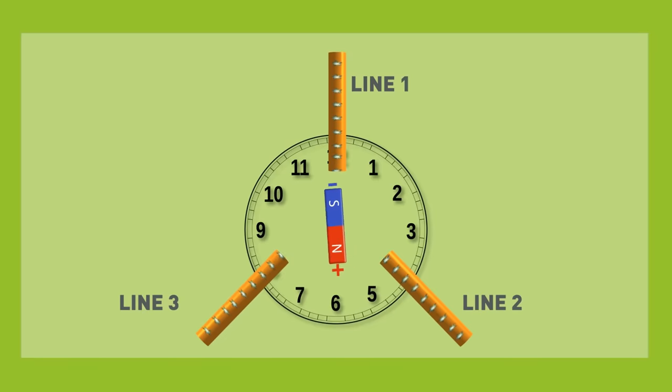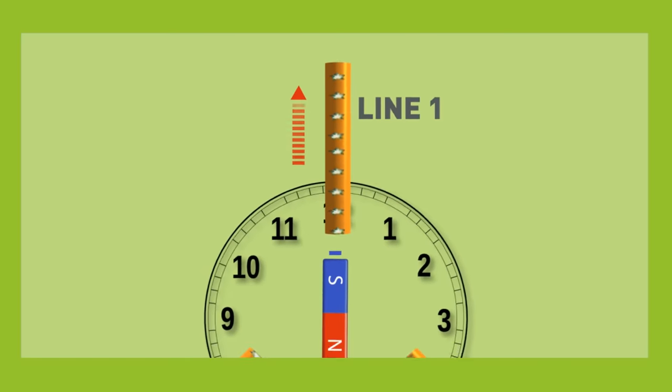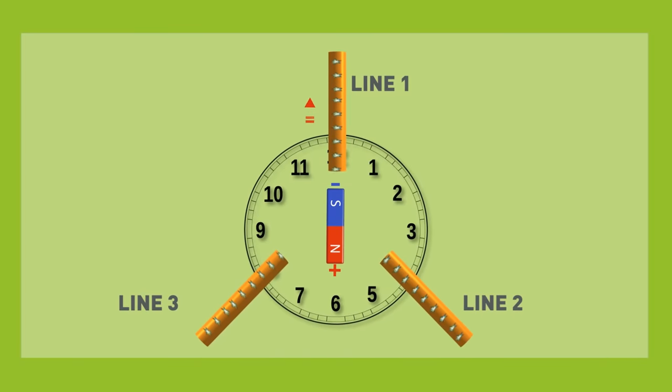Then as the magnet swings more than 90 degrees, the south pole of the magnet comes closer to line one, and the electrons will reverse, which means the direction of the current will reverse. That was described in detail in the alternating current video.